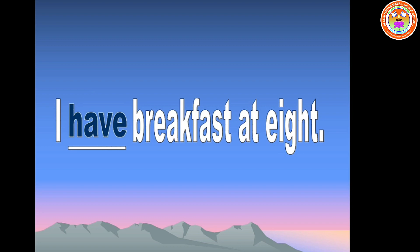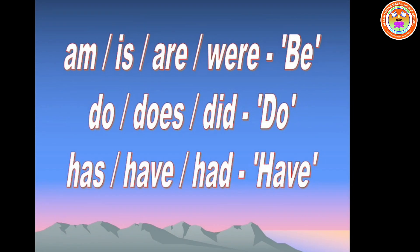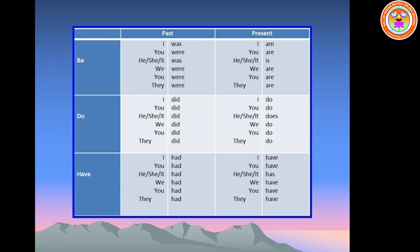Let us recall. There are two types of auxiliary verb: primary auxiliary and modals. Auxiliary verbs are called helping verbs. There are three types of primary auxiliary verb: be, do, have. Am, is, was, are, were are be forms. Do, does, did are do forms. Has, have, had are have forms. Am is used with the pronoun I. Is, was, does, has are used with singular subject. Are, were, do, have are used with plural subjects.